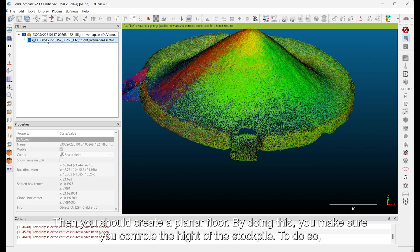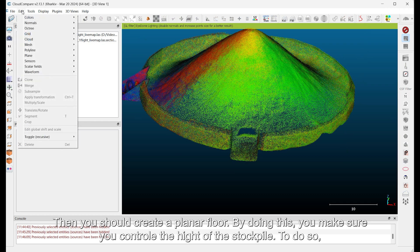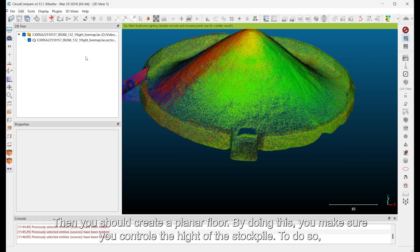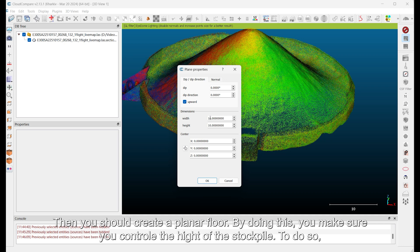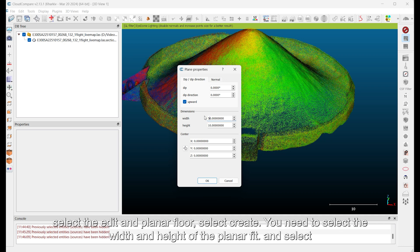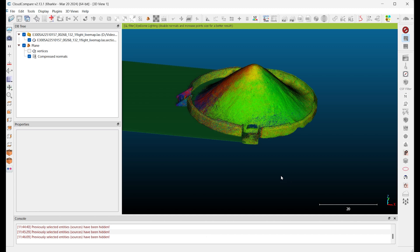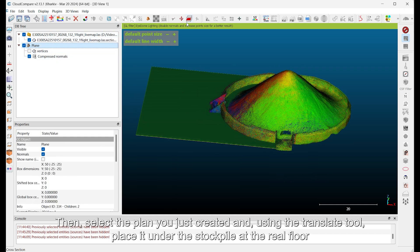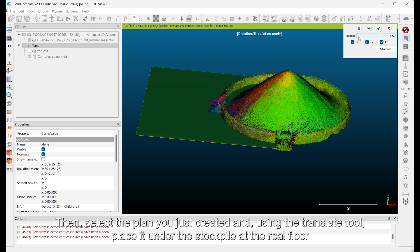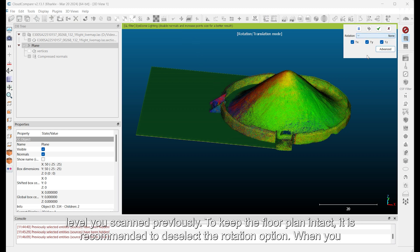Then you should create a planar floor. By doing this, you make sure you control the height of the stockpile. To do so, select the edit and plane of floor. Select Create. You need to select the width and height of the planar fit. And select OK. Then, select the plan you just created and, using the Translate tool, place it under the stockpile at the real floor level you scanned previously.